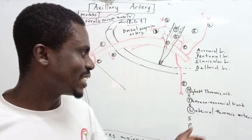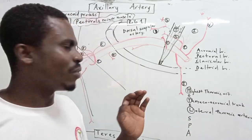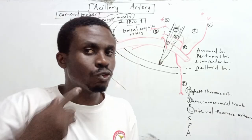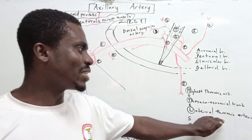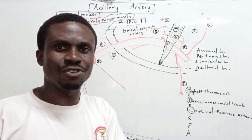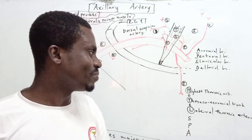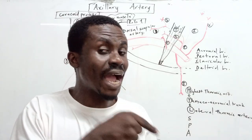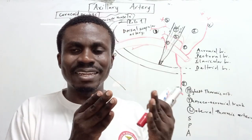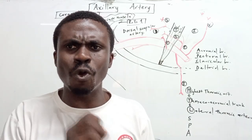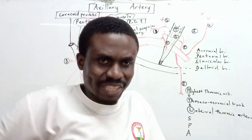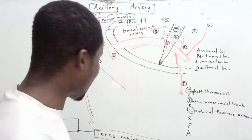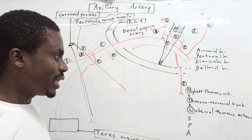So to summarize: the first part of the axillary artery gives one branch, the second part gives two branches, and the third part gives three branches. The three branches from the third part are represented by S, P, and A in the mnemonic SPA.